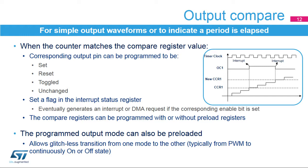A compare event is generated when the counter matches the value of the compare register. This event can trigger an interrupt or DMA request and can be reflected on the output pin by an output set, reset, or toggle. The compare register can be preloaded; preload must be disabled if multiple compare values must be written during a counting period. Preload mode should be preferred for real-time constraint applications, giving a higher time margin for software to update the compare register. Transfer from preload to active value is triggered by an update event when the counter overflows or underflows.